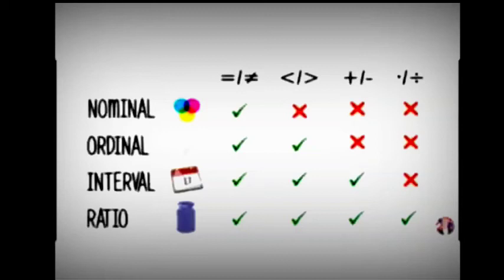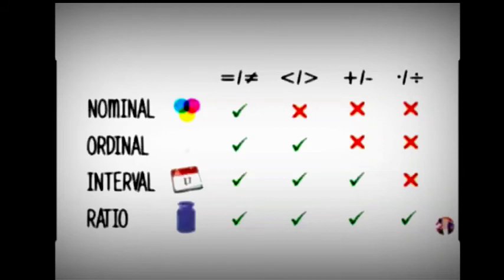For the ordinal scale, we can determine greater than or less than relationships — for example, first position, second position, and third position — to find out rankings. However, addition, subtraction, division, or multiplication in the ordinal scale will yield meaningless results. Equal to, greater than, or less than operations are valid for the ordinal scale.